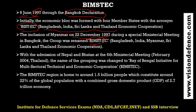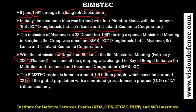In 2004, Nepal and Bhutan joined the group, so the name was changed to Bay of Bengal Initiative for Multi-Sectoral Technical and Economic Cooperation. BIMSTEC is home to around 1.5 billion people, which is around 22 percent of the world population, and they have a combined GDP of 2.7 trillion.